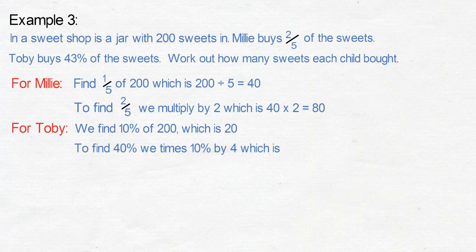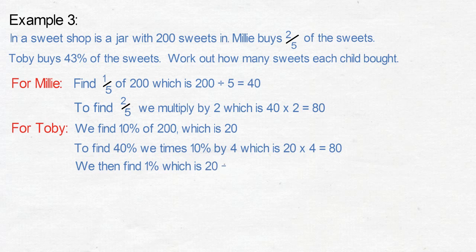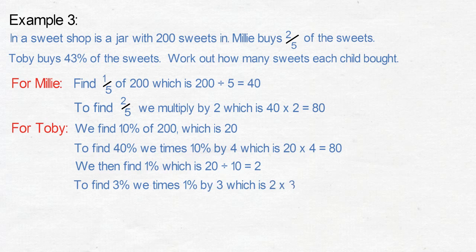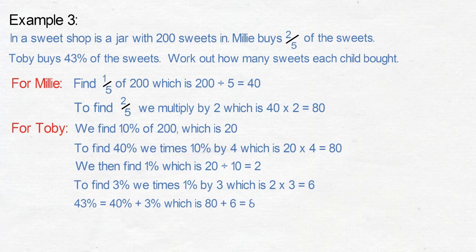To find forty percent, multiply ten percent by four: twenty times four equals eighty. Then find one percent: twenty divided by ten equals two. To find three percent, multiply one percent by three: two times three equals six. Forty-three percent equals forty percent plus three percent, which is eighty plus six, giving us eighty-six.